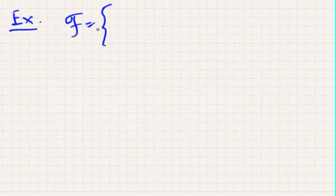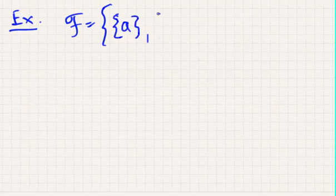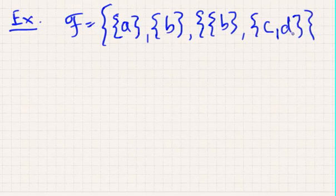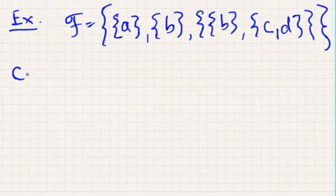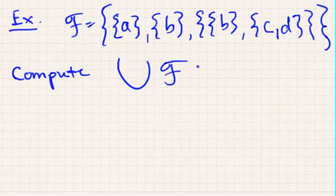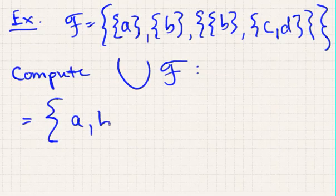So, example, so let's say that f is this set here, where we have A, B, and then B, C, D. So, if you were to compute this, this turns out to be equal to this set here.